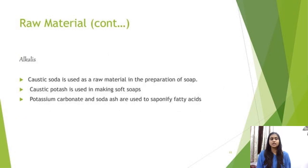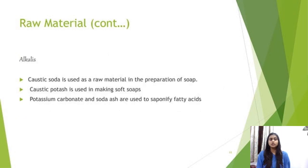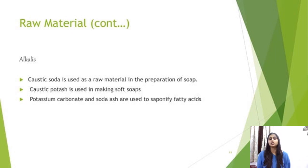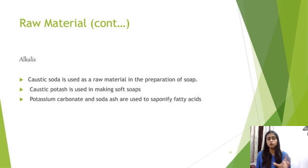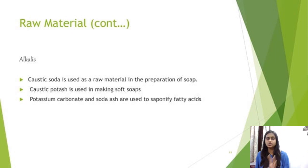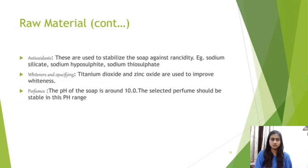Raw materials — alkalis such as caustic soda (NaOH): KOH is used in the making of soft soap whereas caustic soda is used in the preparation of hard soaps. Potassium carbonate and sodium ash are used to saponify fatty acids.